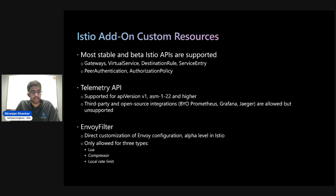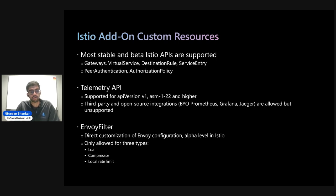Envoy filter is another custom resource where we allow three specific types: Lua, compressor, and local rate limiting — but all other Envoy filters are disallowed. This is something to use with caution, as it is alpha in open source Istio and is a direct customization of the Envoy configuration, making it very error prone. It should be used by mesh administrators judiciously.